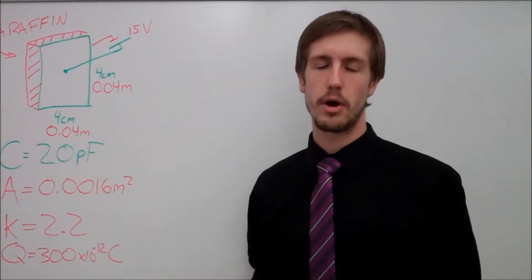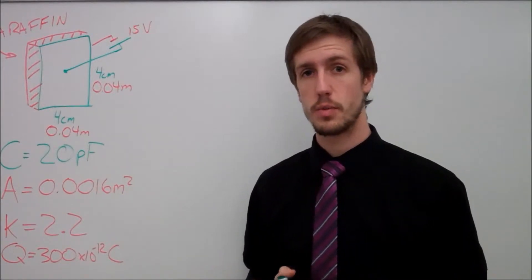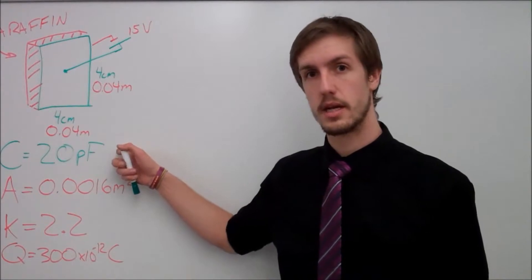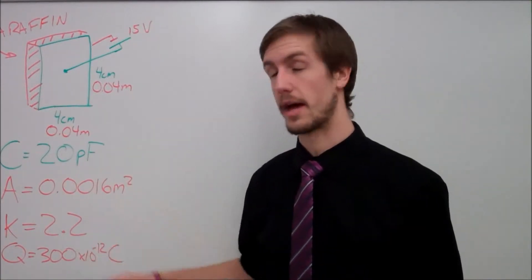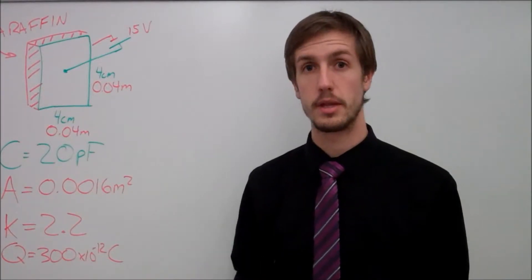So now we're going to get into part A. And to find the separation distance, what we're going to do is we're going to need to know our area, we're also going to need to know our capacitance, and we're also going to need to know our K value. From there, everything else that we need is going to be given to us. So this is the formula that we're going to use.